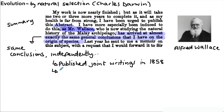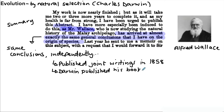What is quite interesting is that about a year later, Charles Darwin published his now very famous book called On the Origin of Species in 1859 — and he published it by himself.